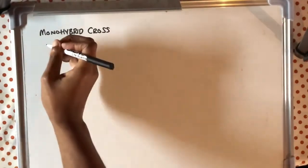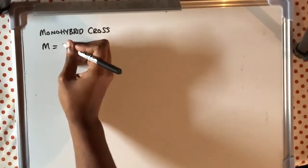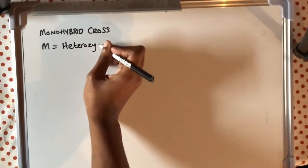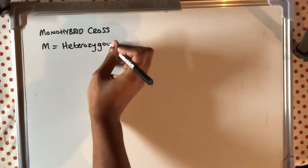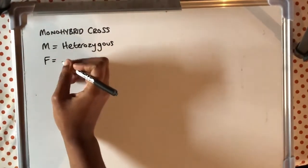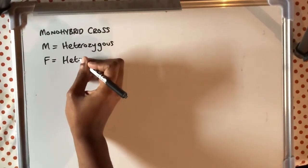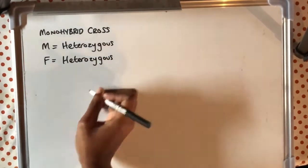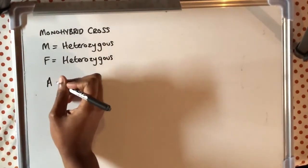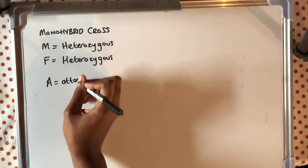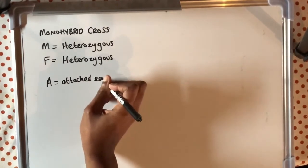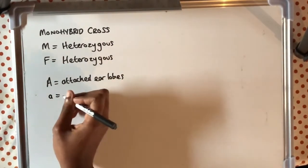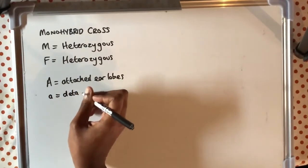In our next example, I am going to use both the mother and the father as heterozygous. Heterozygous means they have different alleles for the same gene. Again, we are using the same rules — putting our mother at the top and our father on the left-hand side.